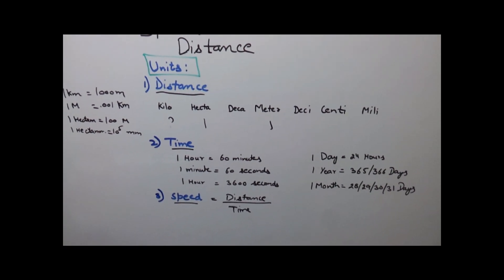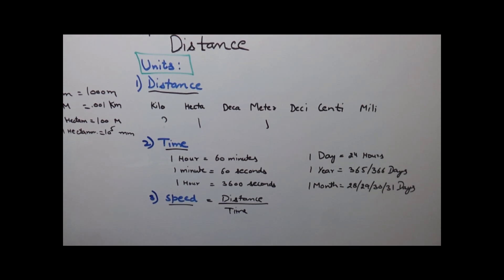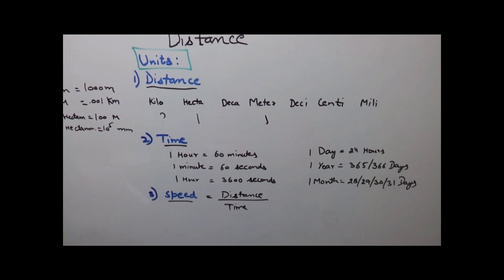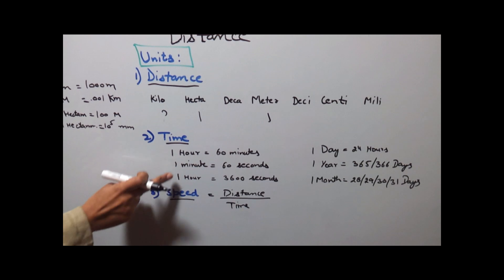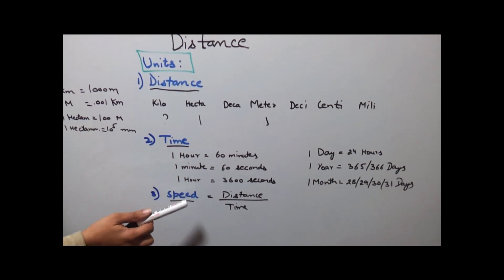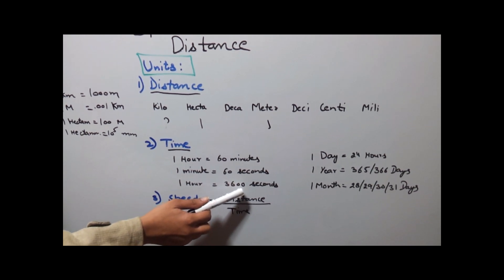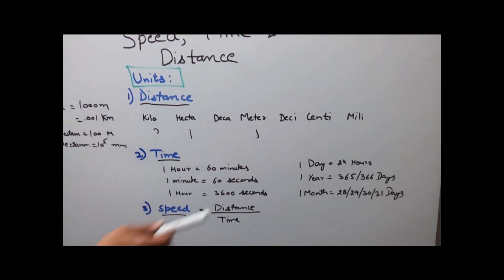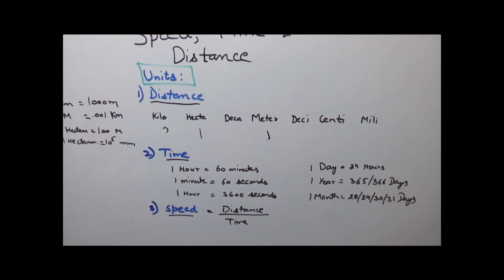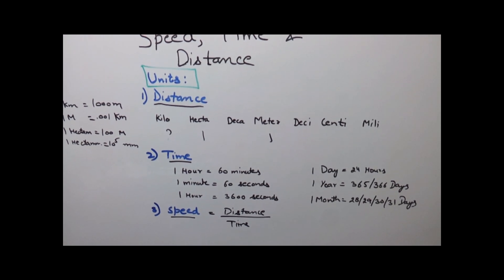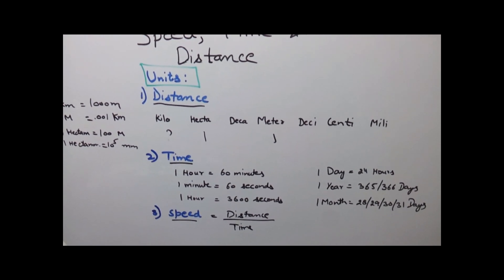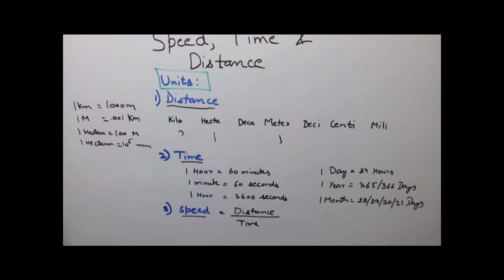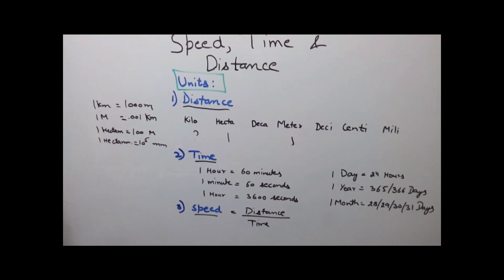Time is generally measured in hours or minutes, but it can also be measured in days, years, months, weeks, etc. 1 hour has 60 minutes, and 1 minute equals 60 seconds, which gives us that 1 hour equals 3600 seconds, calculated by multiplying 60 into 60. 1 day has 24 hours and 1 year can have 365 days or 366 days if it is a leap year where February has 29 days.